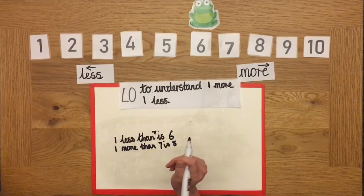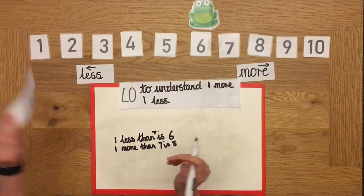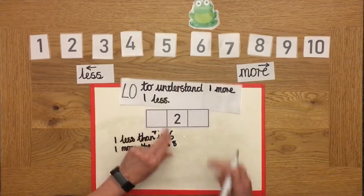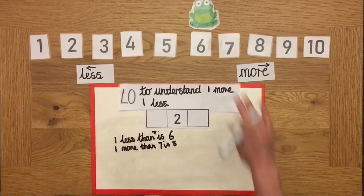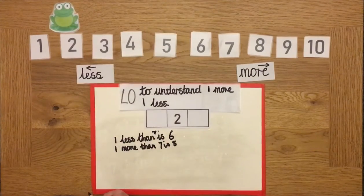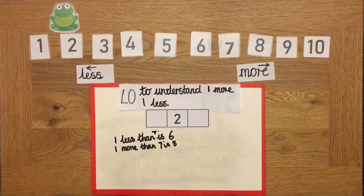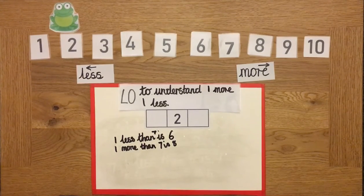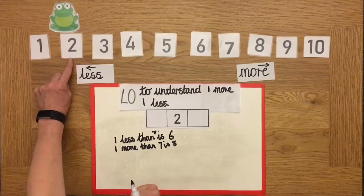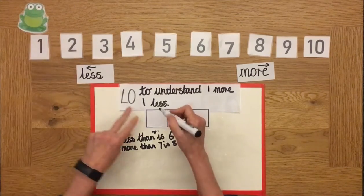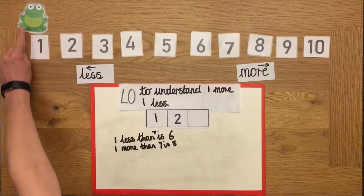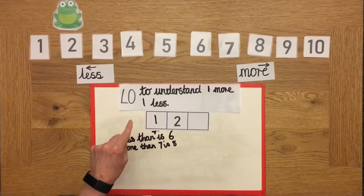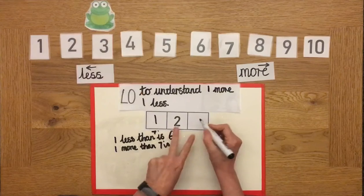I've got another one. Where do we start? Brilliant. We start at number two. Which numbers do we put? We do the one less now, shall we? Just start with that. One less than two is one. Go back to number two, because that's the one in the middle. What's one more? Fantastic. Three.